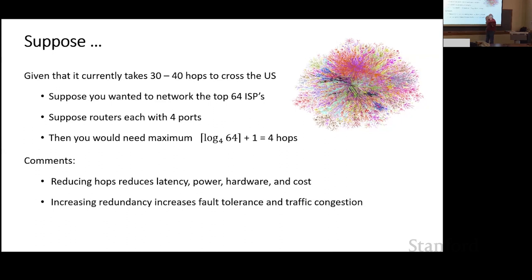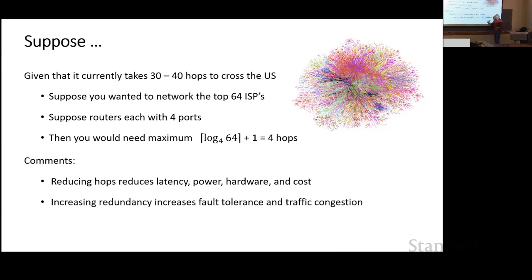When you reduce hops, you reduce latency — going through a bypass takes nanoseconds; going through a router takes milliseconds. You also reduce power, since only routers consume significant power while optical bypasses are passive. You reduce the number of router ports needed. You reduce cost to run and upgrade the system. And by increasing redundancy, you increase fault tolerance — if Chicago or Texas goes offline, you can route around it. You also relieve traffic congestion when everyone's simultaneously streaming.